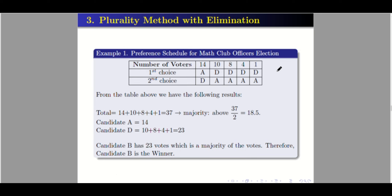We now have only two candidates: A and D. Candidate A has 14 first-place votes, and candidate D has 23. Since 23 is larger than 18.5, D now has a majority. Therefore, candidate D is our winner.